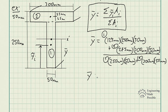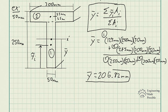So we get the centroid Y-bar equal to 206.82 millimeters, which is where the centroid is located from the bottom of the T-beam. Now we move on to solve for the area moment of inertia about the X prime axis.